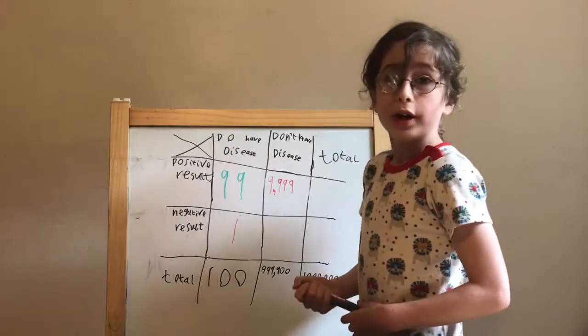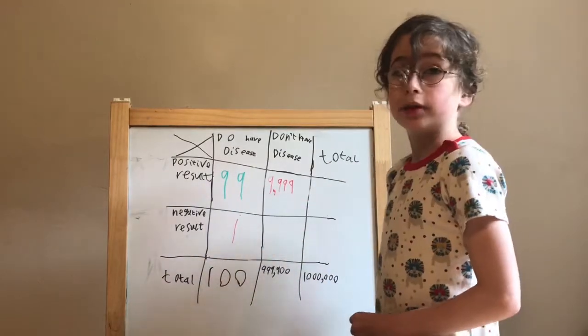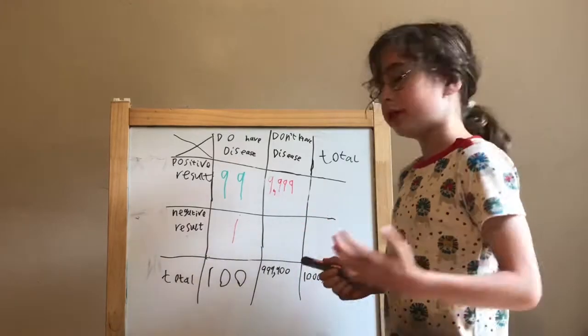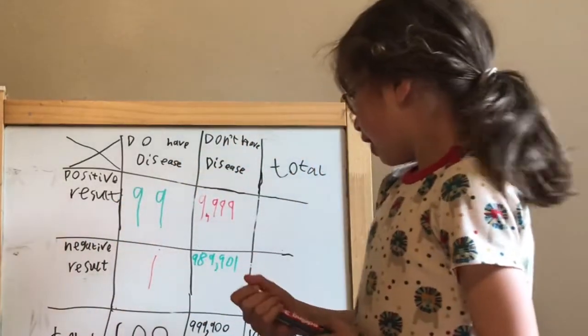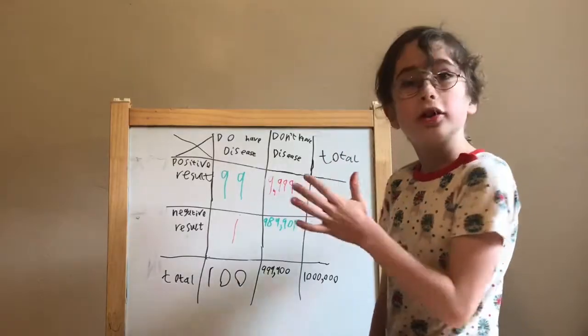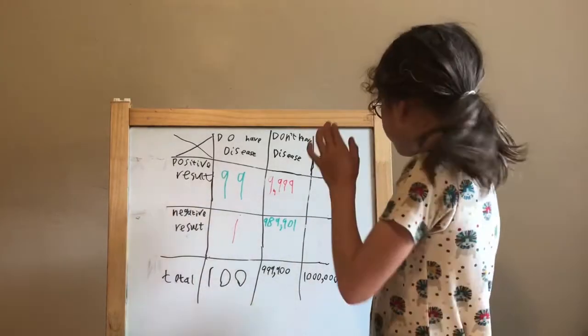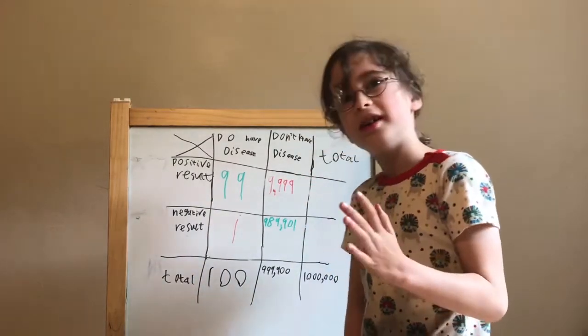The people who don't have it and get the correct result is everybody else, which is 989,901. So we're going to add up how many people have a positive result.